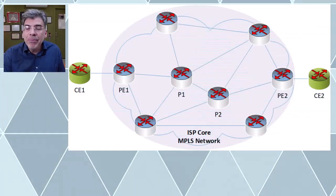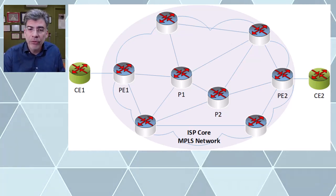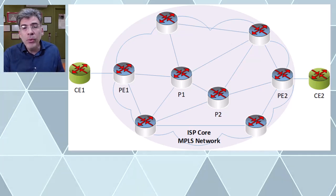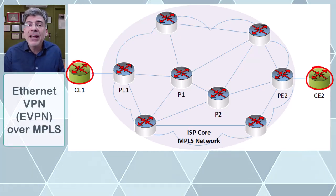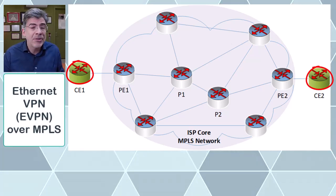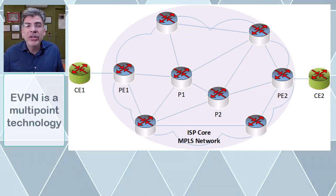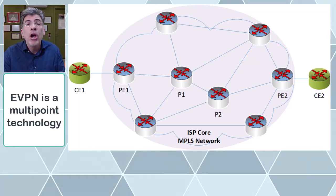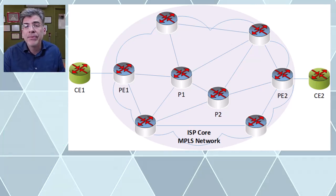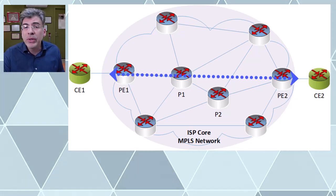MPLS is an extremely versatile data carrying technology that is able to encapsulate a wide range of network protocols including both Layer 2 and Layer 3 protocols. In this video we'll be creating a multi-point Layer 2 VPN between two customers using eVPN over MPLS, encapsulating Ethernet frames. eVPN is a multi-point technology which means you can create Layer 2 VPNs with many more than just two endpoints, however for our topology we'll only be creating a connection between two points.